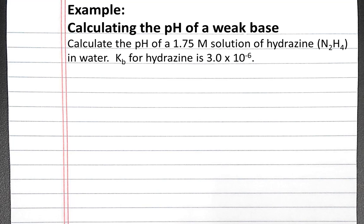To solve this problem we'll want to use a RICE table. In the RICE table we have the reaction in the first row, then the initial concentration, the change in concentration, and then the equilibrium concentration.